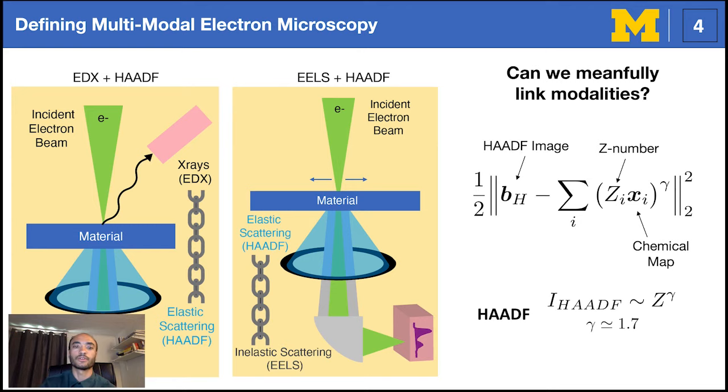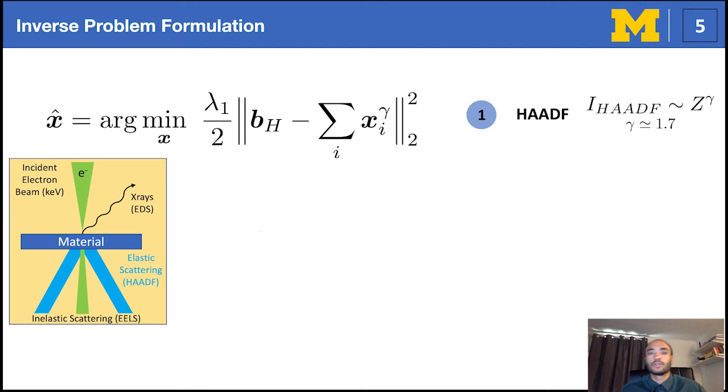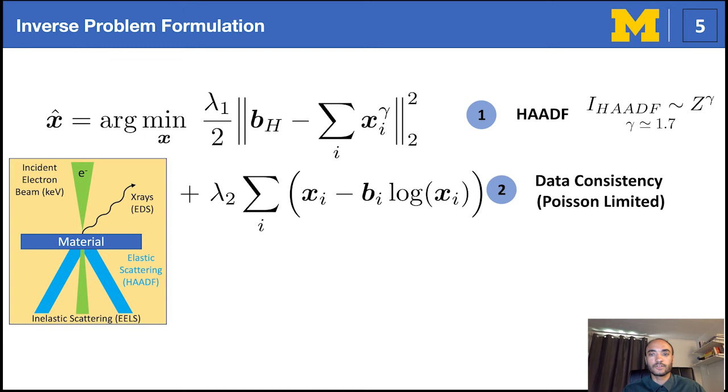Now that we've defined a model that faithfully links the modalities, we can incorporate additional terms that account for the noise statistics and provide regularization. Due to the discrete counting statistics occurring inside the spectroscopic detectors, either by measuring individual transmitted electrons or emitted photons, we enforce data consistency from a maximum likelihood derived from a Poisson distribution. Data consistency ensures the resulting reconstructions represented here by x maintain structure from the original chemical measurements as denoted by b sub i.